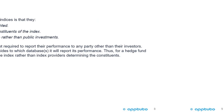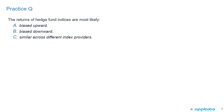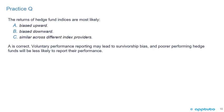One last practice question: The returns of hedge fund indices are most likely — A, biased upward; B, biased downward; or C, similar across different index providers. A is correct. Because there is voluntary performance reporting, it may lead to a survivorship bias — a term we've seen in other sections of the CFA. Poor performing hedge funds will be less likely to report their performance, so the returns of hedge fund indices are most likely biased upward. That's the last slide for this LOS. Thank you.